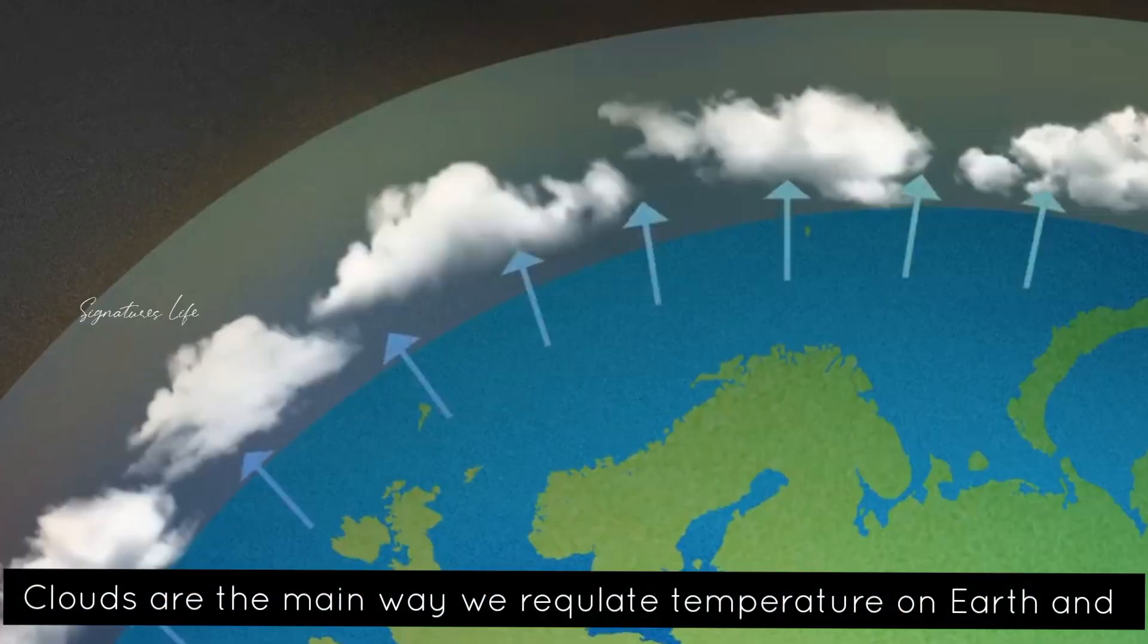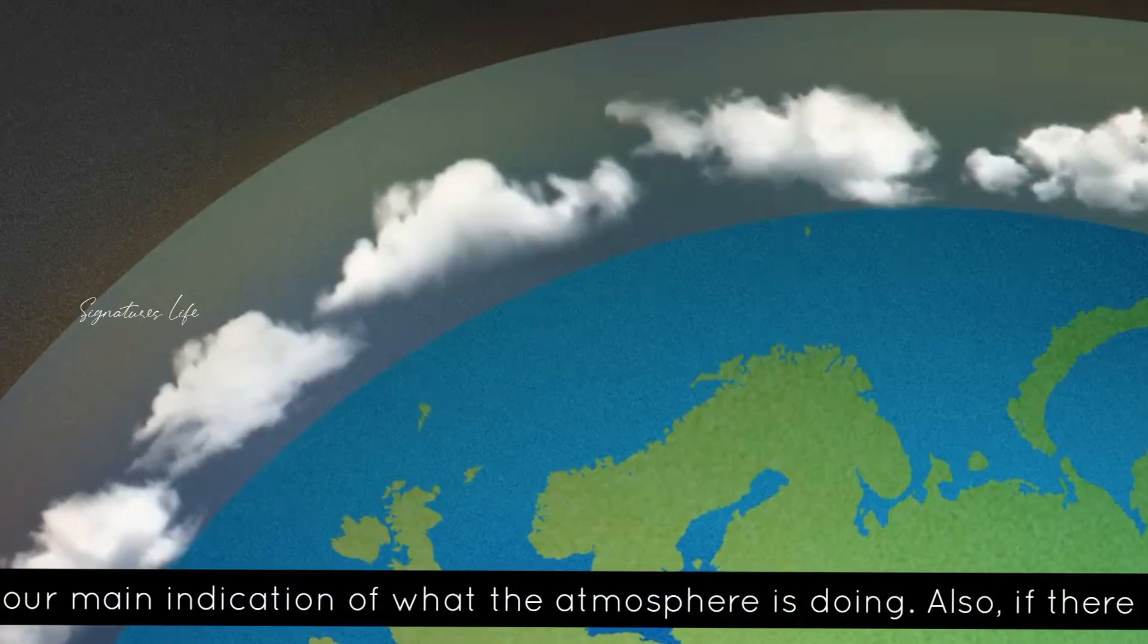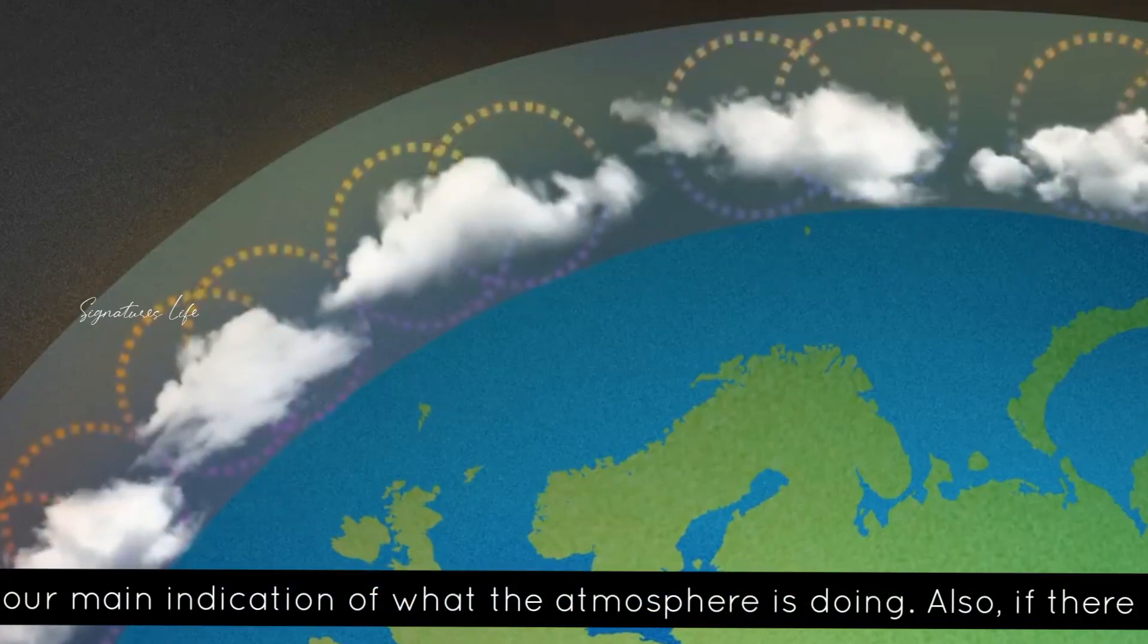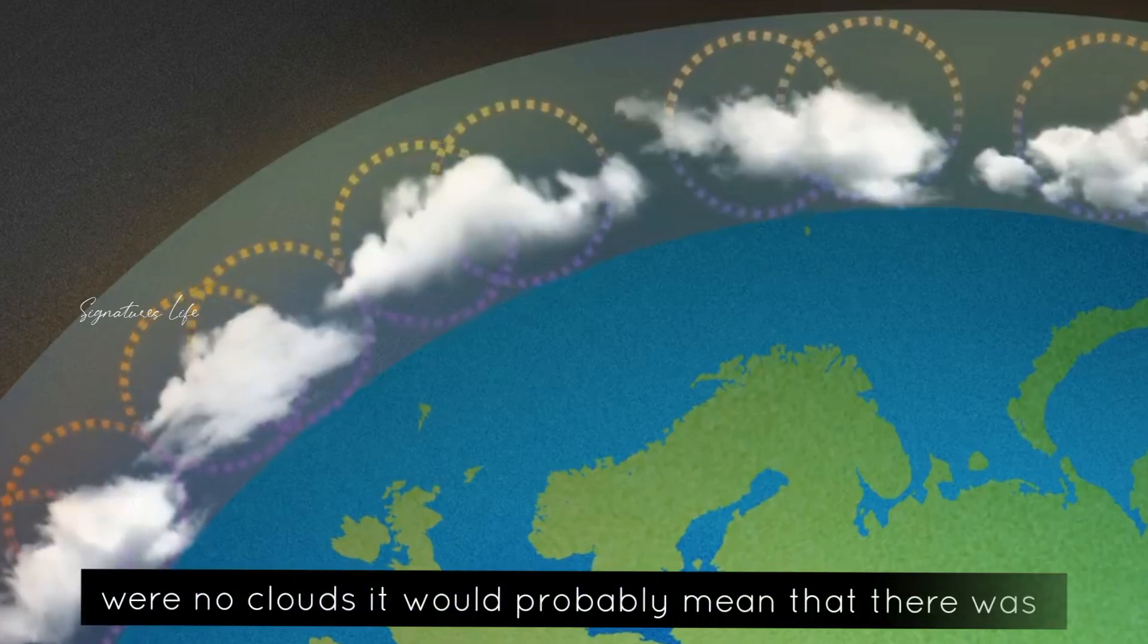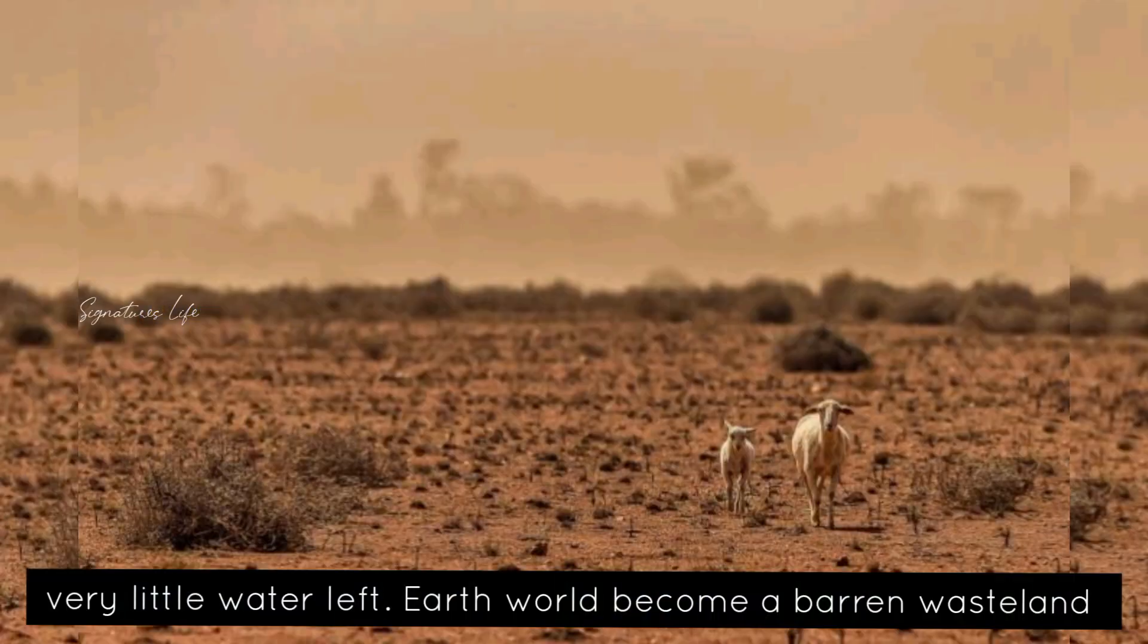Clouds are the main way we regulate temperature on Earth and our main indication of what the atmosphere is doing. Also, if there were no clouds, it would probably mean that there was very little water.